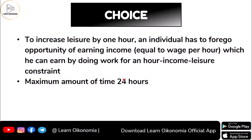If you increase your leisure by one hour, there exists an opportunity cost — you are forgoing your opportunity to earn more income. If you decrease your leisure by one hour, there is no opportunity cost, but increasing leisure by one hour means you sacrifice a wage. You have a 24-hour constraint and we call it the income-leisure constraint, because the maximum 24 hours is the only time available.